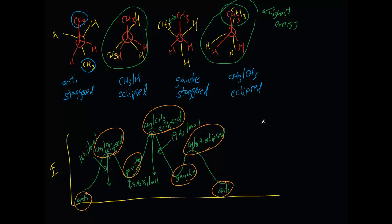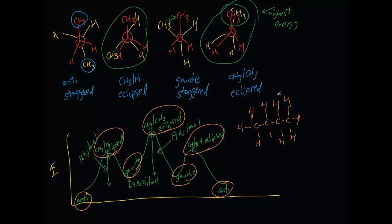If I were to draw the butane in a very simple, flat molecule — which obviously is not how it really looks, and that's the whole purpose of Newman projections to begin with — what I'm rotating is this central bond here, to result in all these different conformations.